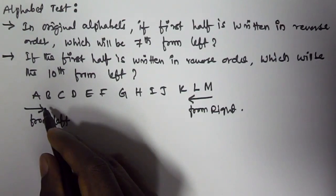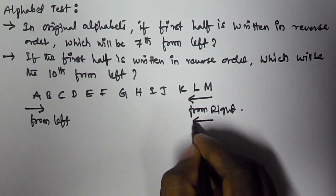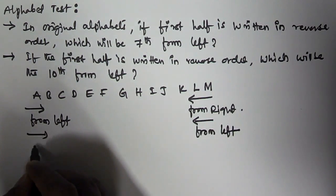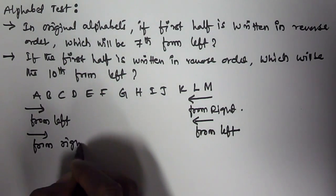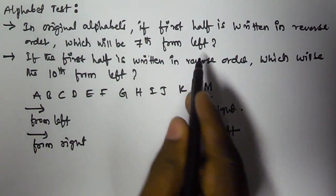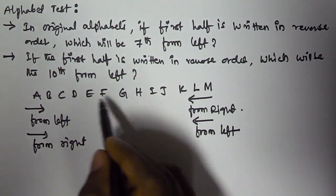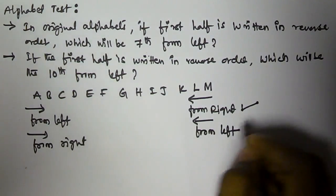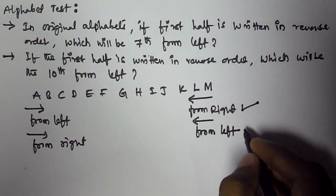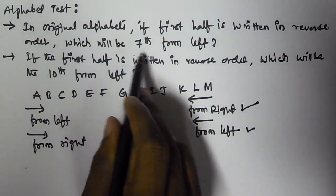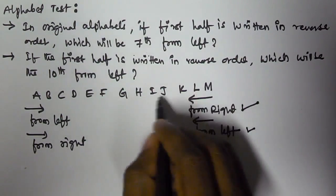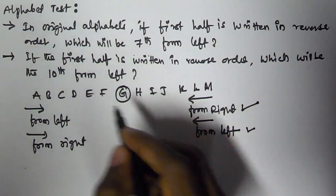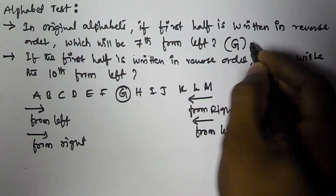When we write the first half in reverse order, what was from left becomes from right and vice versa. So now which will be the seventh from the left? This side originally is in original order, but after reversing it becomes from left. So counting from left: one, two, three, four, five, six, seven — that is G. So the answer to the first question is G.